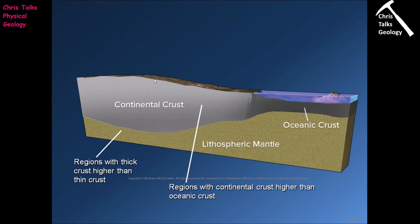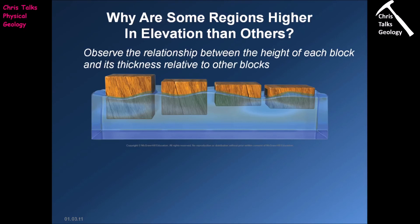Regions where the crust is thicker tend to be topographically higher. Because continental crust is thick, it forms topographic highs; because oceanic crust is thin, it forms topographic lows, which fill up with water leading to the formation of oceans. To understand why thick crust forms topographic highs, we need to think about the idea of isostasy. We can explore this by looking at wooden blocks and observing how they compare to each other.